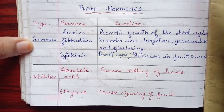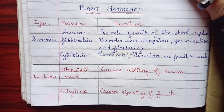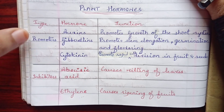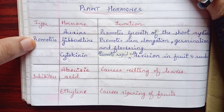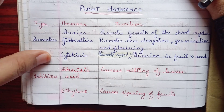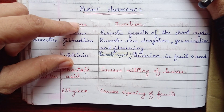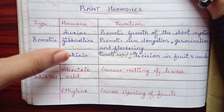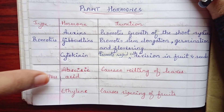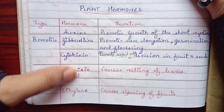Plant hormones are substances that alter growth. There are two types of growth regulators: promoters and inhibitors. Promoters help in growth, while inhibitors stop or slow the growth rate. Under promoters we have three: auxin, gibberlin, and cytokinin. Under inhibitors we have two: abscisic acid and ethylene.